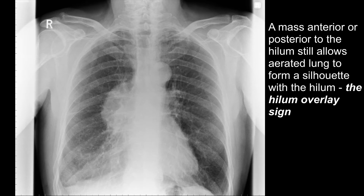Here is an anterior mediastinal mass. The right heart border is obscured by this mass lesion, as is the lower right heart border. If you look through the mass lesion, you can see blood vessels converging on the hilum, and this is the hilum overlay sign, meaning that the mass lesion must be anterior or posterior to the hilum.